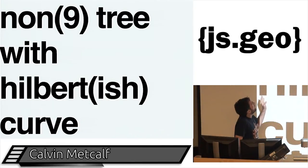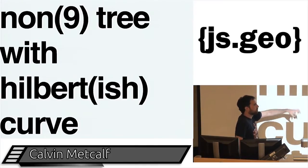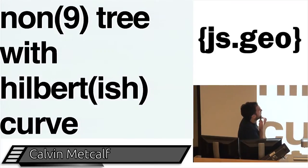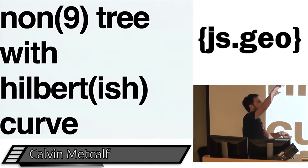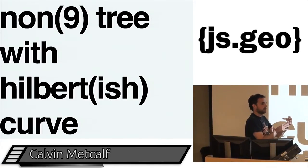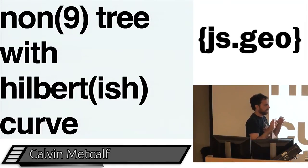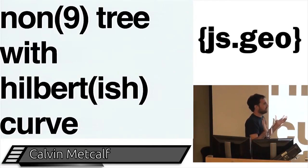I wrote a ternary one with a Hilbert-ish curve called 'no entry,' published a couple weeks ago — if you want to do that kind of thing, it's pretty good. The main problem with geohashes is they're really good for finding things smaller than the query — finding points inside a bounding box works well, but if you have a point and want to find what state it's in, it doesn't work. You can make it work but it's not efficient, so don't do that.